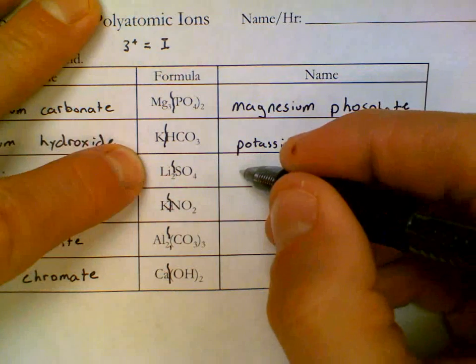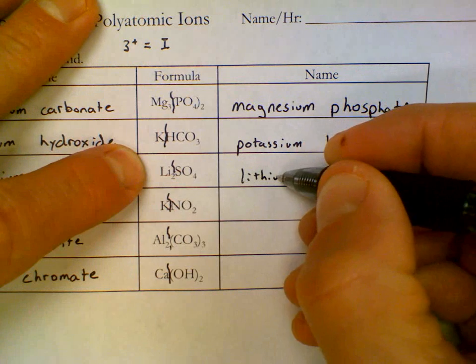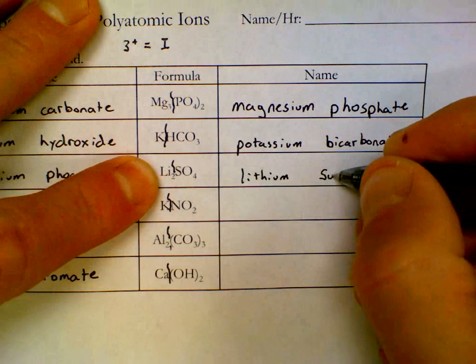Li is called lithium. And then SO₄ is called sulfate.